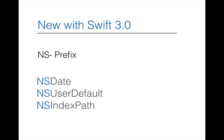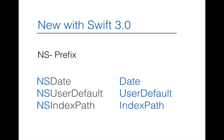The `NS` prefix is being removed. NS stands for NextStep — referring to the company created by Steve Jobs after he first left Apple, which formed the origin of iOS development. `NSDate` becomes `Date`, `NSUserDefaults` becomes `UserDefaults`, and `NSIndexPath` becomes `IndexPath`. The `NS` prefix is progressively stripped in the upcoming version of Swift.